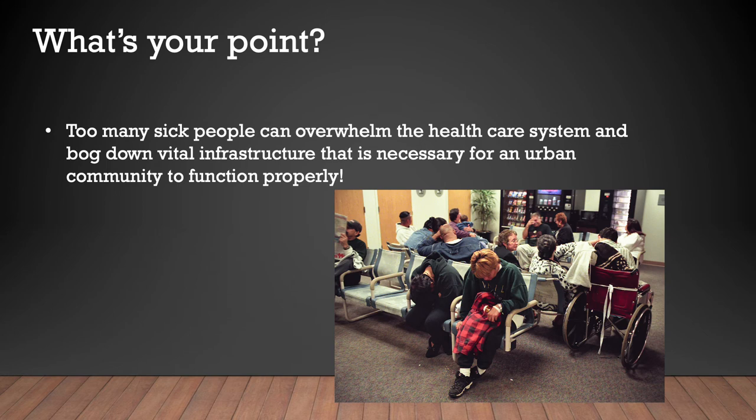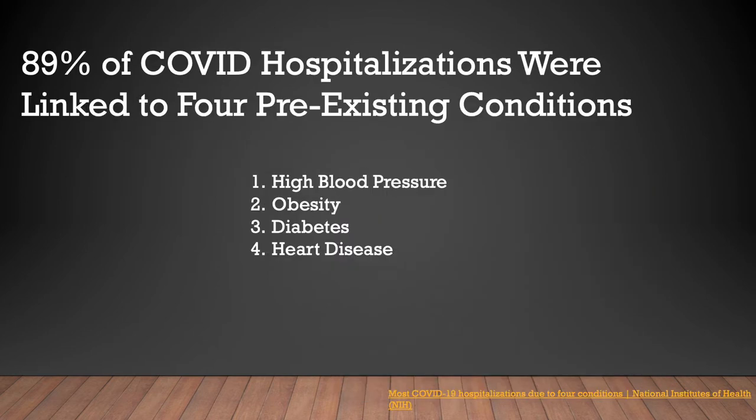Too many sick people can overwhelm the healthcare system and bog down vital infrastructure necessary for an urban community to function properly. We saw this with the COVID pandemic. 89% of COVID hospitalizations were linked to four pre-existing conditions: high blood pressure, obesity, diabetes, and heart disease — all preventable diseases brought on by poor lifestyle choices.